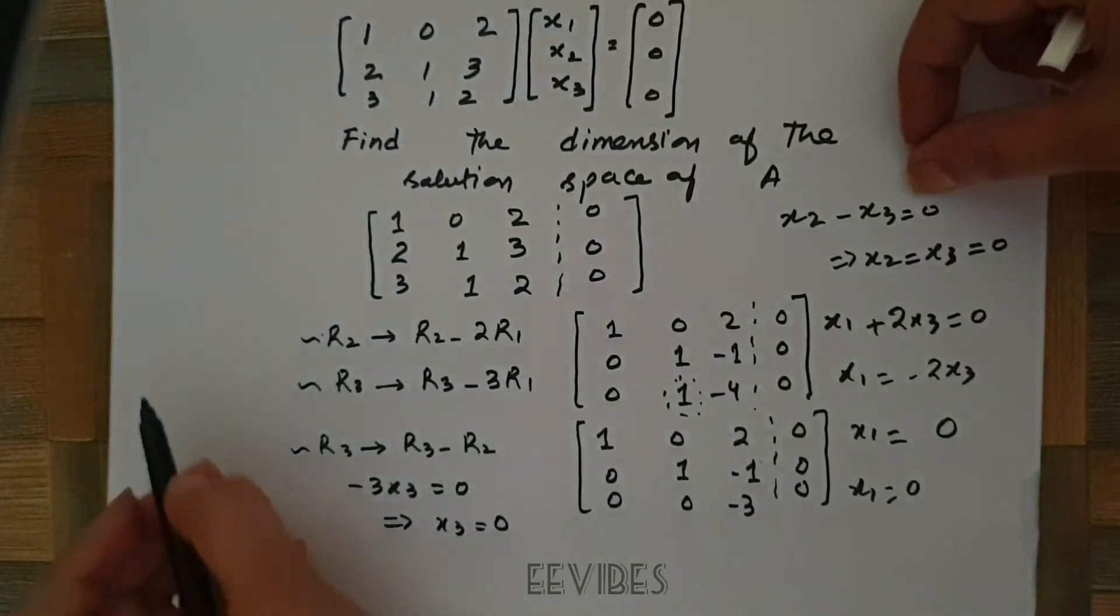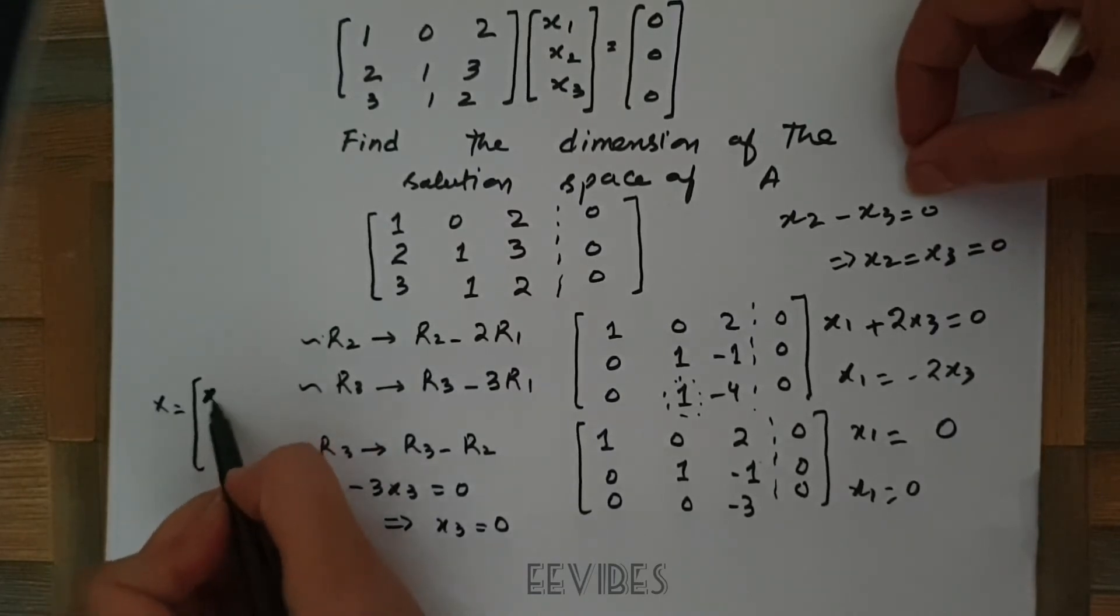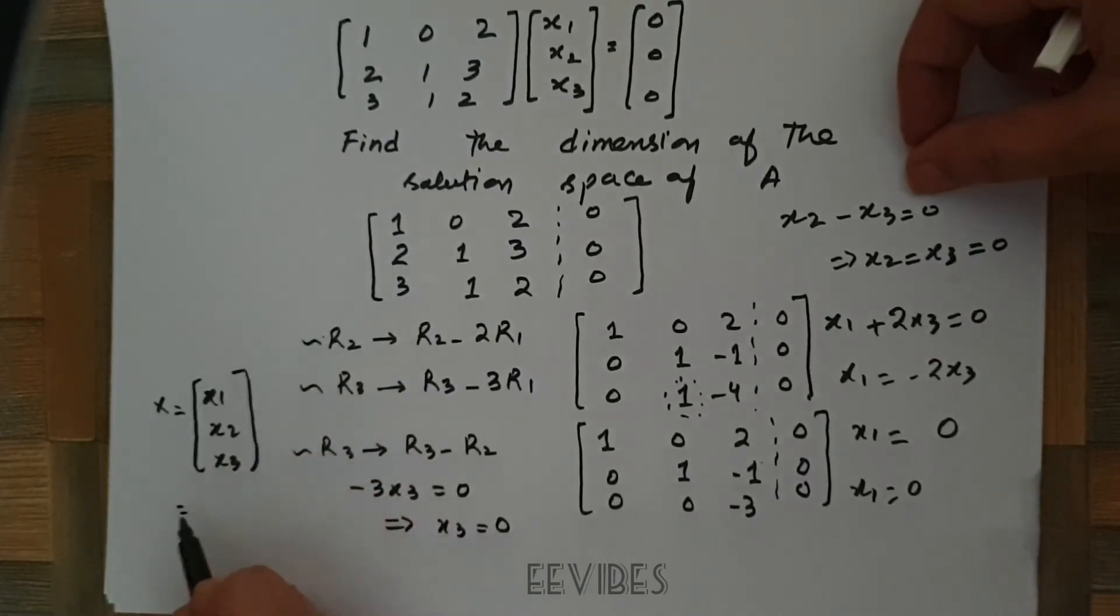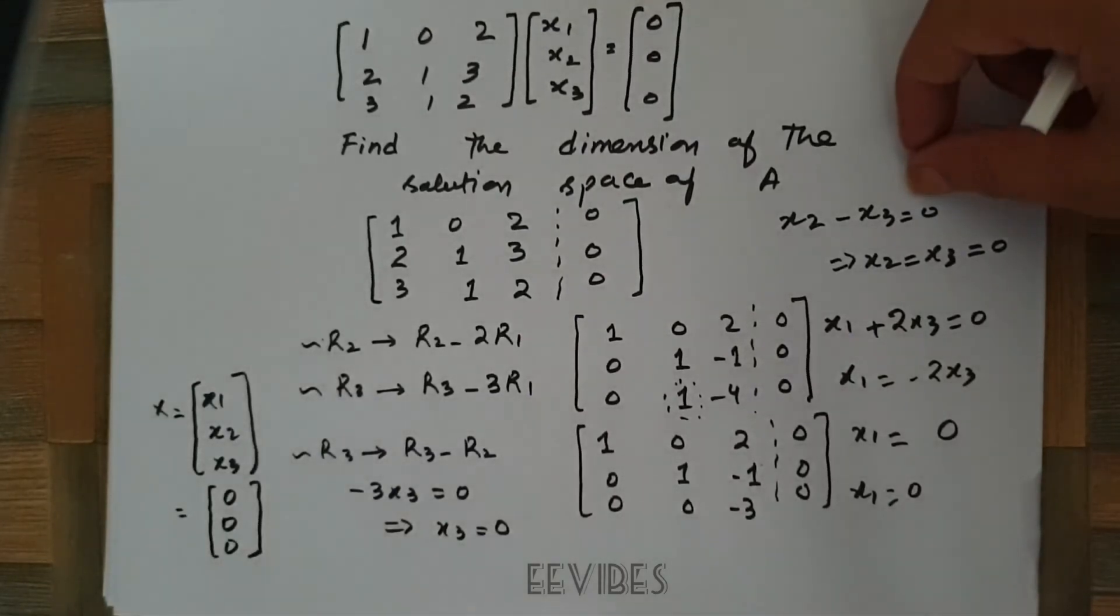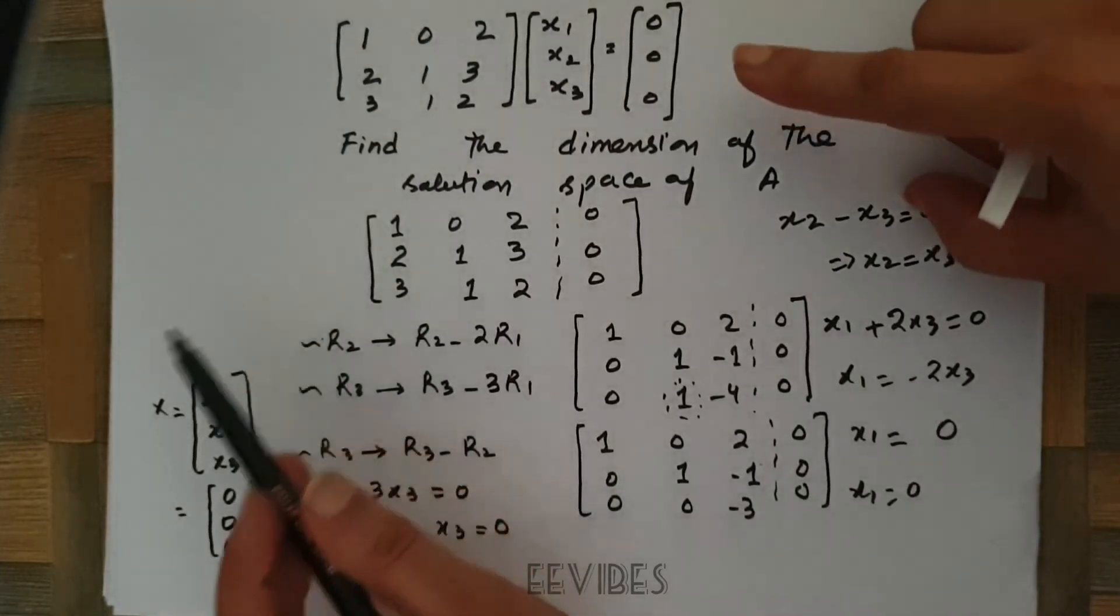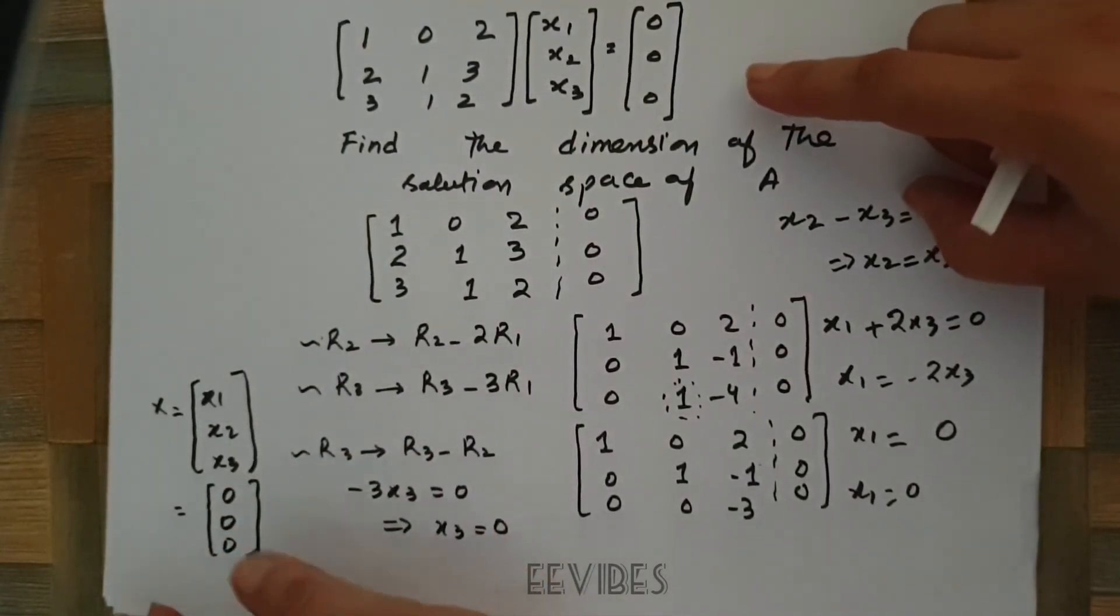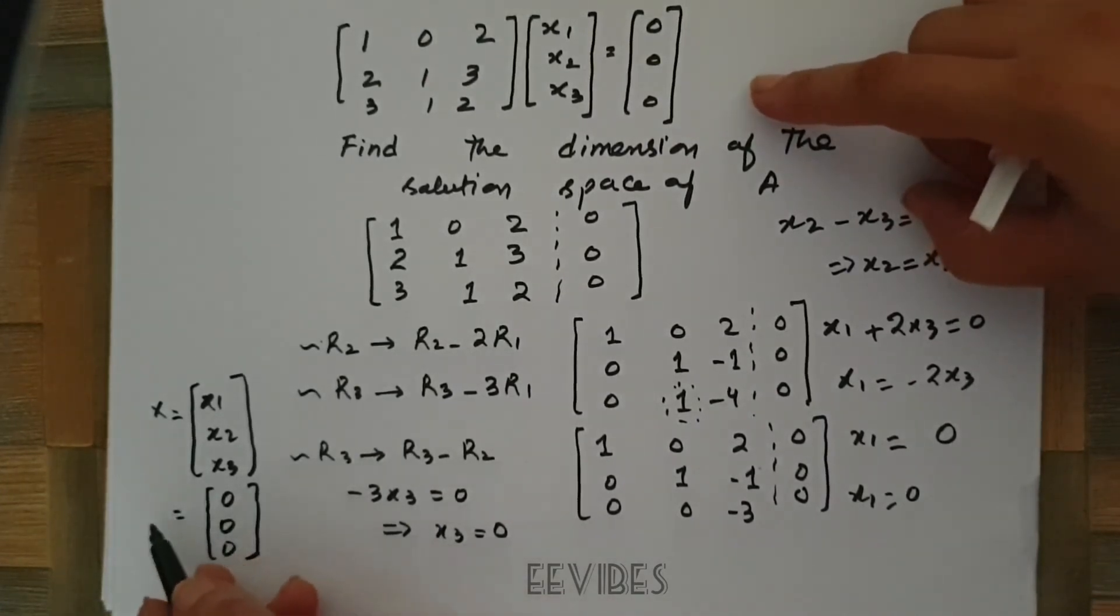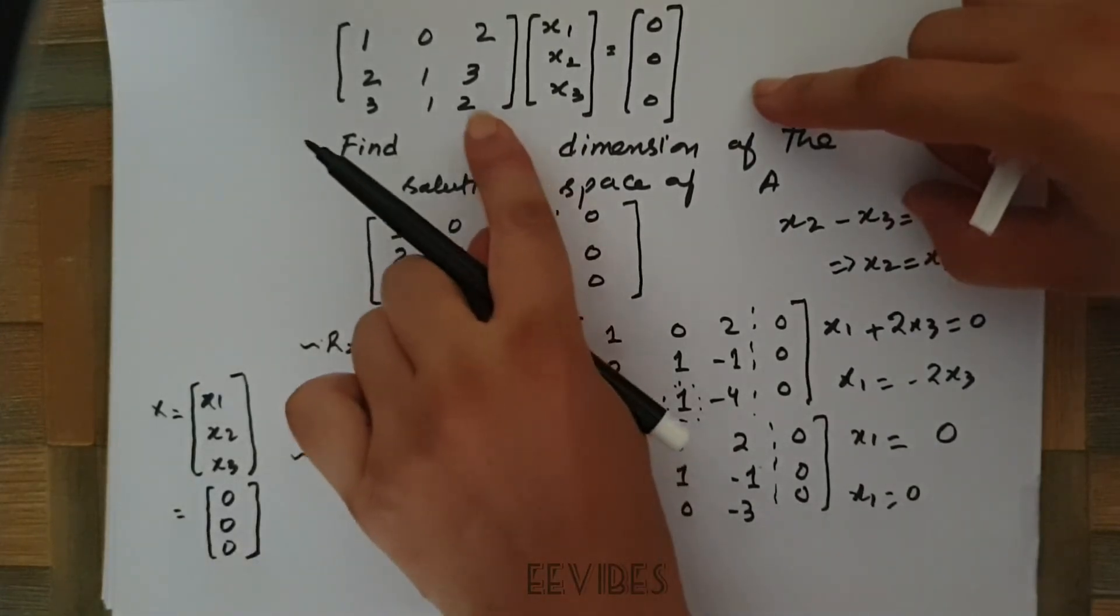So the solution space actually consists of only one vector, that is x having the components x1, x2, and x3, and these values are equal to 0, 0, and 0. Actually, this system has only the trivial solution and no other solution exists. That's why only one vector, which is actually the zero vector, is lying in the solution space.